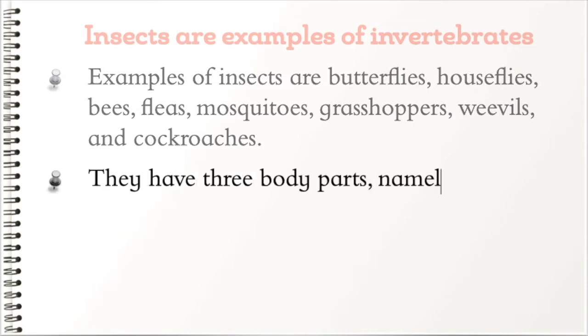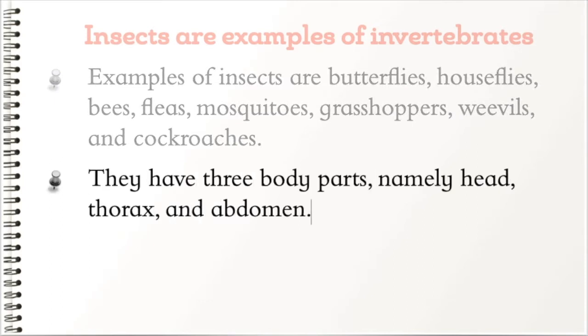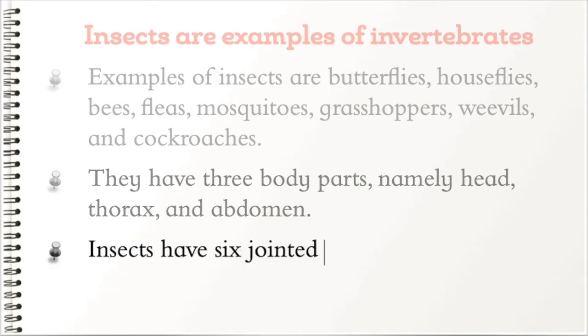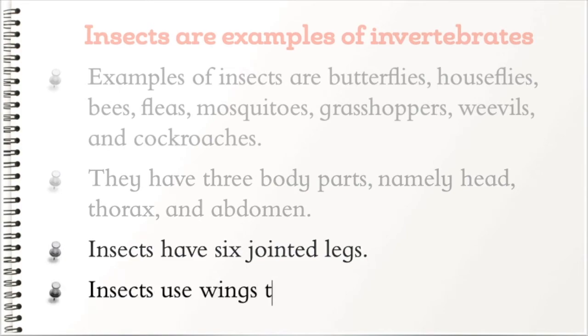They have three body parts, namely head, thorax, and abdomen. Insects have six jointed legs. Insects use wings to fly. Not all insects fly.